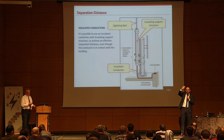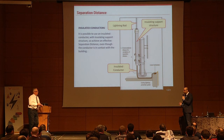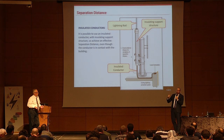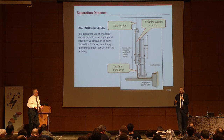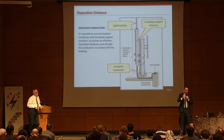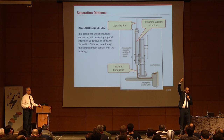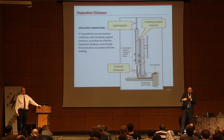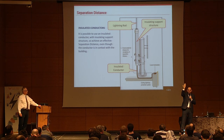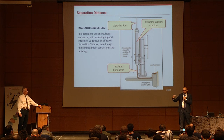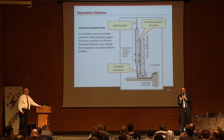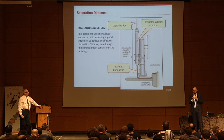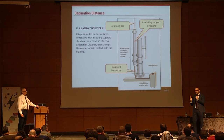İletken bir yüzey varsa izoleli yakalama uçları kullanmamız en doğrusu. Böylece temas geriliminden ve manyetik alandan kurtuluyoruz. Örneğin kamera sistemine yakalama ucu koyuyoruz, ama kamera sistemi tüm elektriksel sistemle bağlı olduğu için, kameraya düşen bir yıldırım direkt elektrik hattına atlayabiliyor. Kullanacağımız sistem izoleli olup, harici bir topraklama sonrası Spark App'le eş potansiyeli alırsak sistemi tamamen koruma altına almış olabiliyoruz. İletken yüzeylerde izoleli sistemler mutlaka kullanılması gerekiyor.